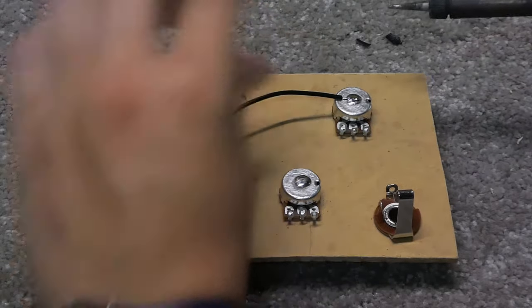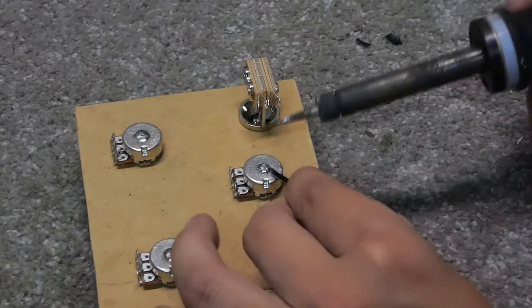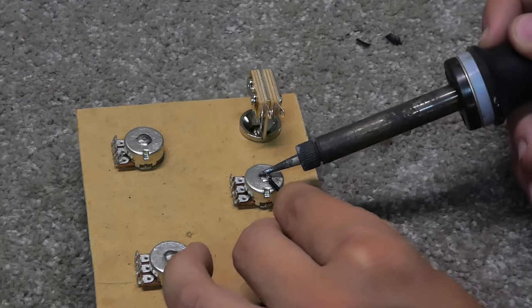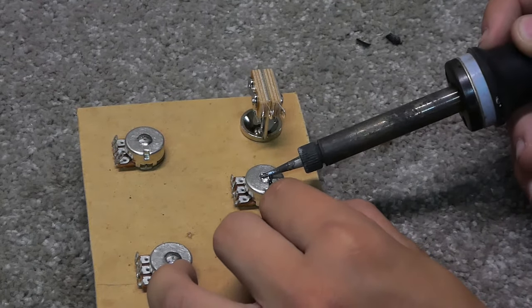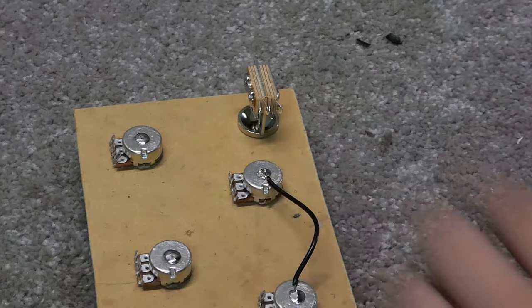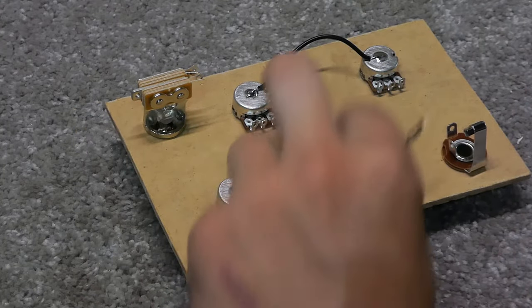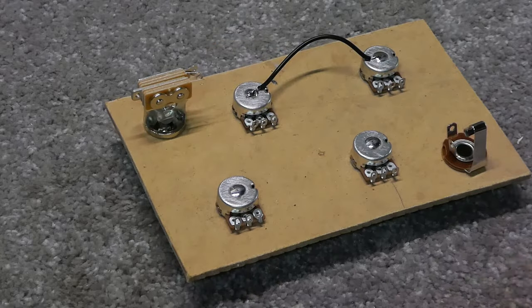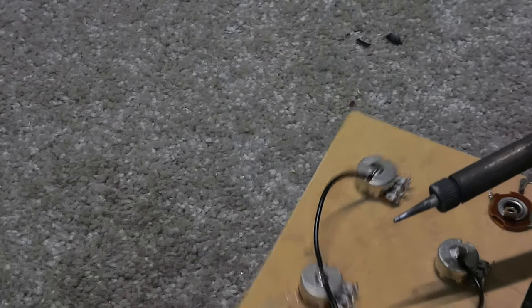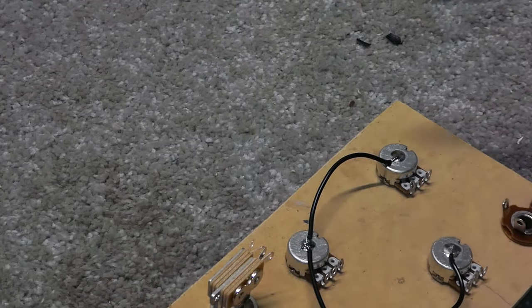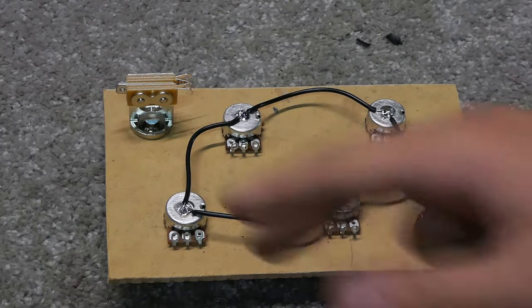And then you want to connect that to the other pot. And do the same to all the wires, bridging them across so everyone is touching. You may need to add a little bit extra solder just to make sure the joint is nice. And when you're finished, it should look something like this.